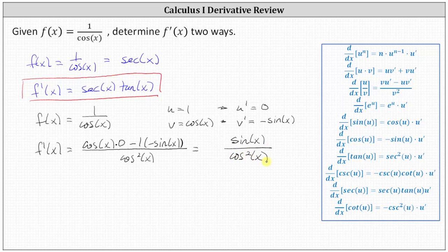Now, we might be thinking this is not the same as the derivative function we found above, but it is because we can write sine x divided by cosine squared x as one over cosine x times sine x divided by cosine x.